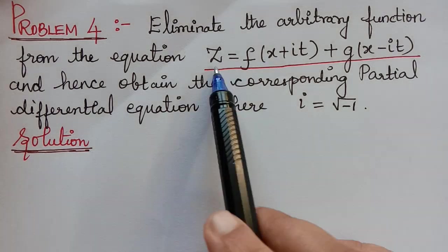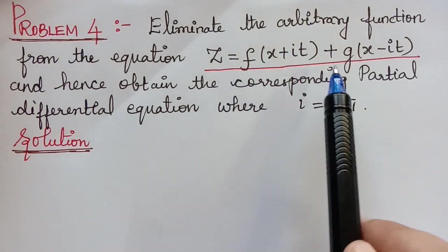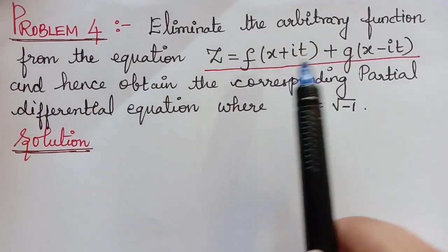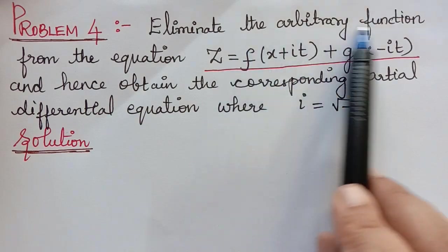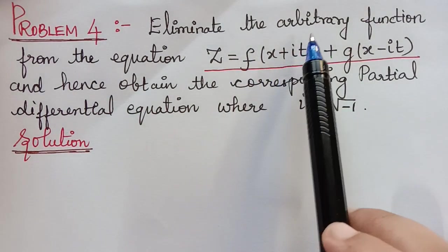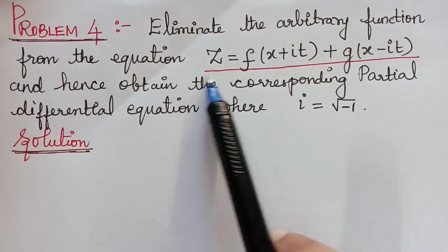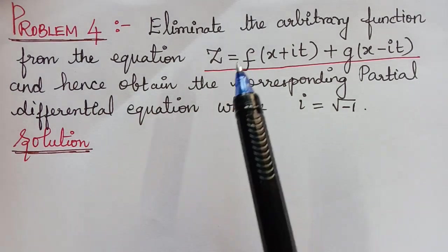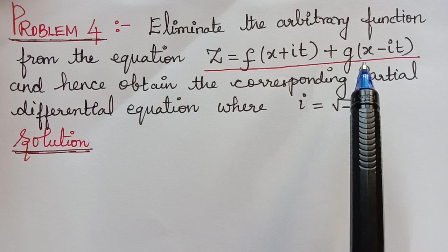Now here, in the given equation, there are two functions. So in this case, we have to follow an extra step to find the partial differential equation corresponding to this given equation. In order to eliminate the arbitrary functions f and g, we have to differentiate the given equation twice partially with respect to x and also partially with respect to y.